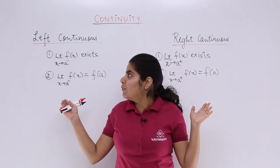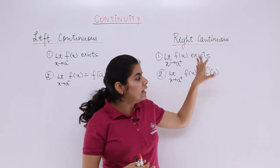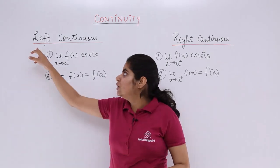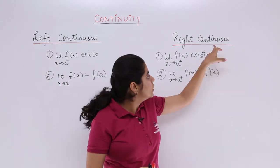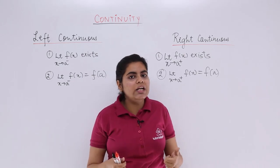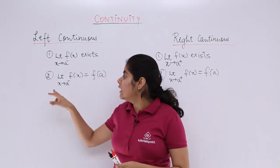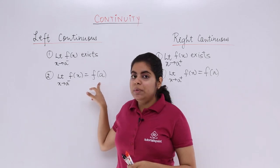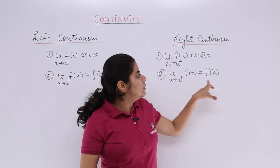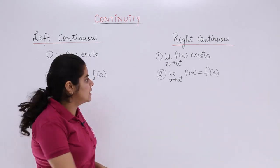Now if you club these two together, you see that the first condition is the same — that the limit should exist, whatever limit we are talking about. Here the left hand limit should exist, and here the right hand limit should exist. And we know for continuity, both these should exist and should be equal. The left hand limit should be equal to the value of the function, and the right hand limit should be equal to the value of the function.